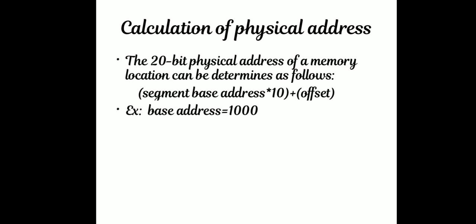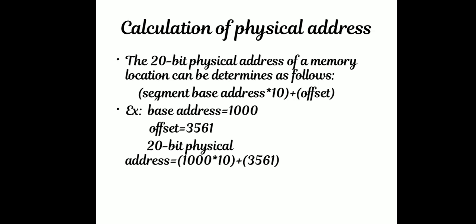For example, if the segment base address is 1000 and the offset is 3561, then: 1000 × 10 (hex) = 10000, plus 3561 equals 13561. So the 20-bit physical address is 13561. This is how we calculate the actual 20-bit physical address.